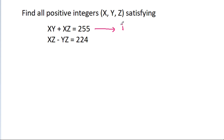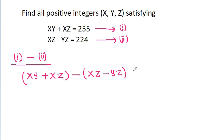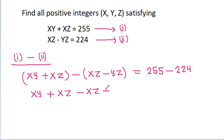Suppose this is equation 1 and this is equation 2. If we subtract equation 2 from equation 1, it will be xy - xg - (xg - yg) = 255 - 224, which gives xy - xg - xg + yg = 31, and the xg terms will get cancelled.